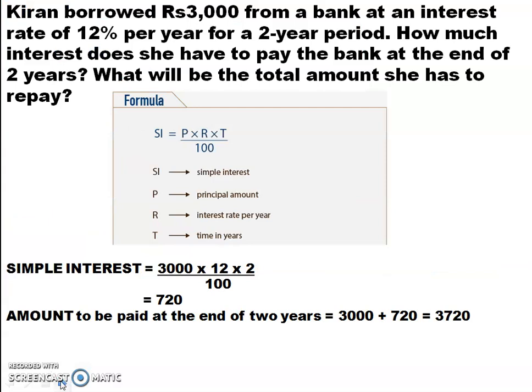We will do one more problem. Kiran borrowed Rs. 3,000 from a bank at an interest of 12% per year. In the previous question the term 'per annum' was used — annum means year, so per annum means per year. Here it is directly given as per year, for a 2-year period. So P = 3,000, R = 12%, T = 2. Simple interest = 3,000 × 12 × 2, the whole divided by 100.